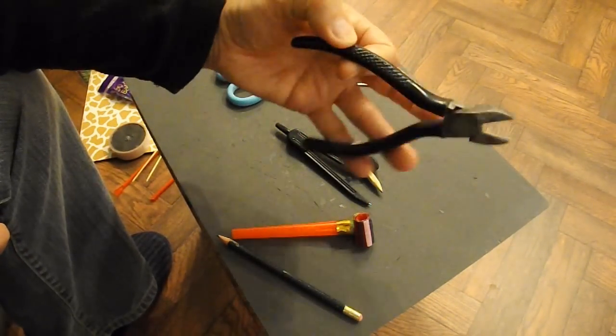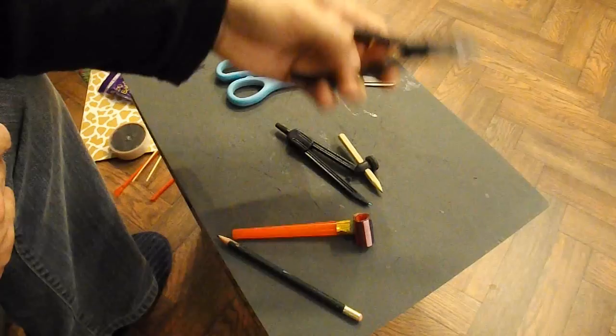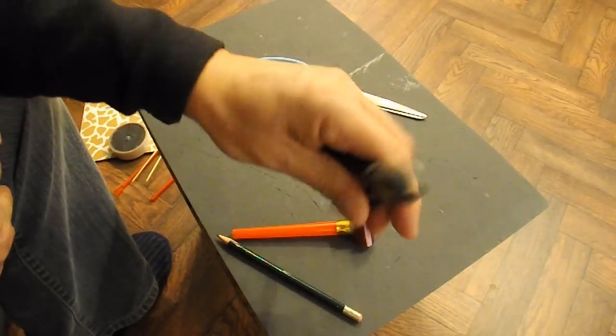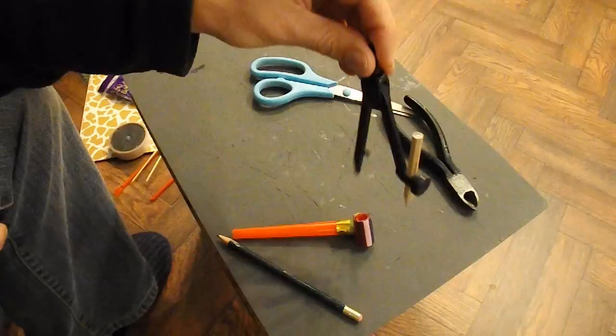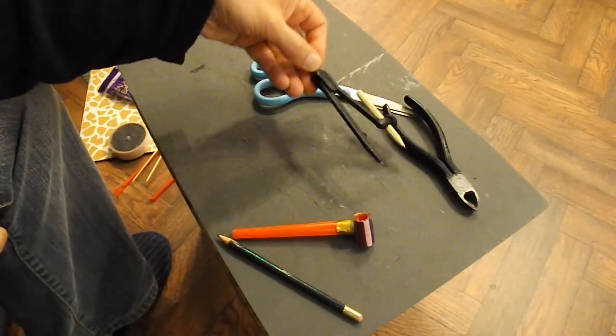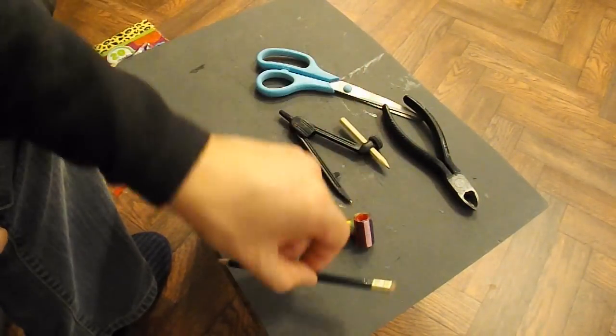Scissors. You can probably cut the barbecue skewers with your scissors, but I'm going to use some cutters. Compass to draw the circles for the wheels. Might need a pencil.